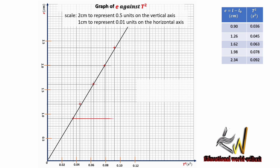To find the slope, I draw a convenient right-angle triangle from the line and read the values off the axes. The slope equals the change in the vertical axis divided by the change in the horizontal axis — that is, change in e over change in T². Using the values 2.50 minus 0.9 divided by 0.1 minus 0.036, the slope simplifies to 25.0 centimeters per second squared. The unit is very important: centimeters per second squared.